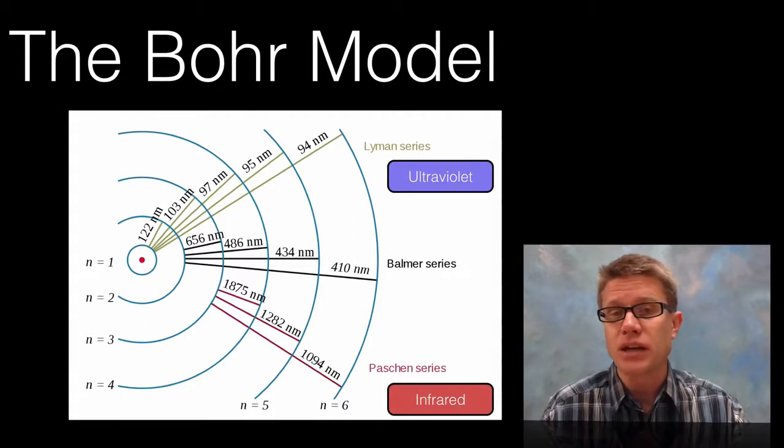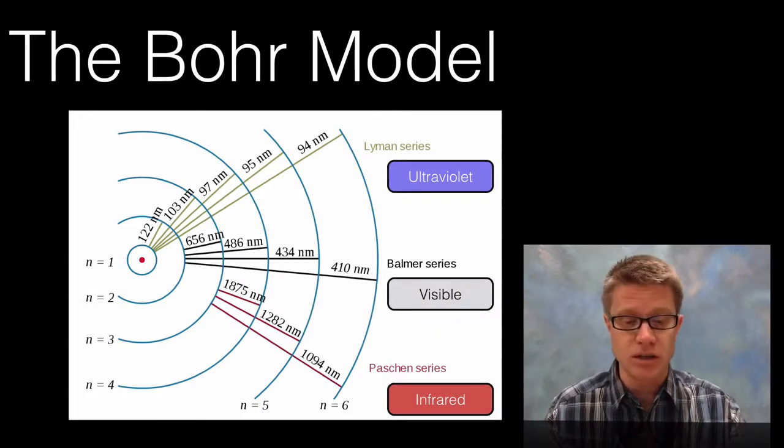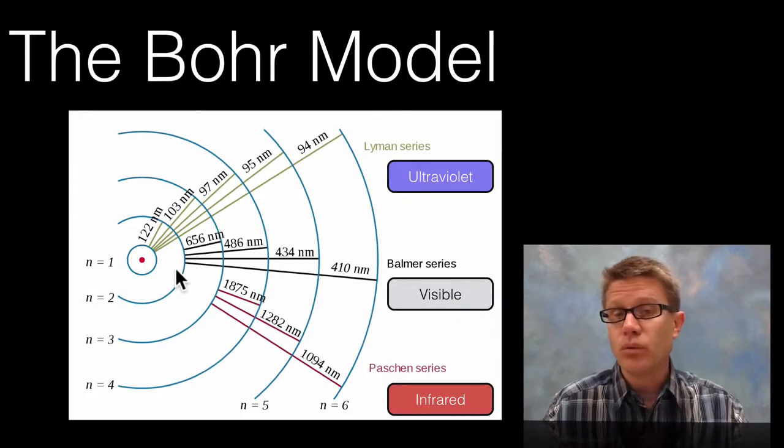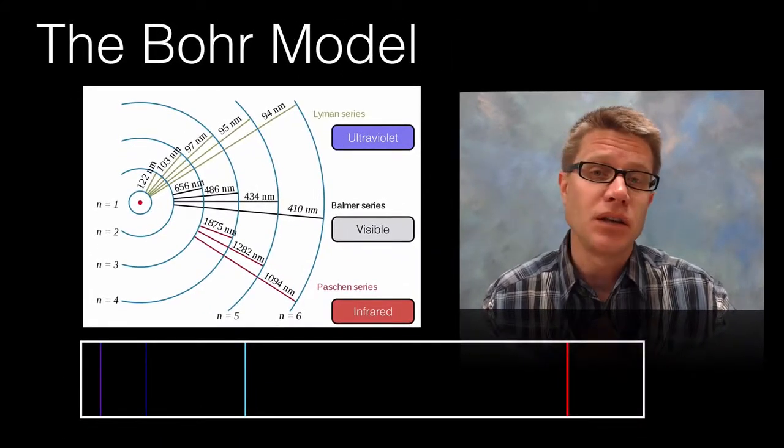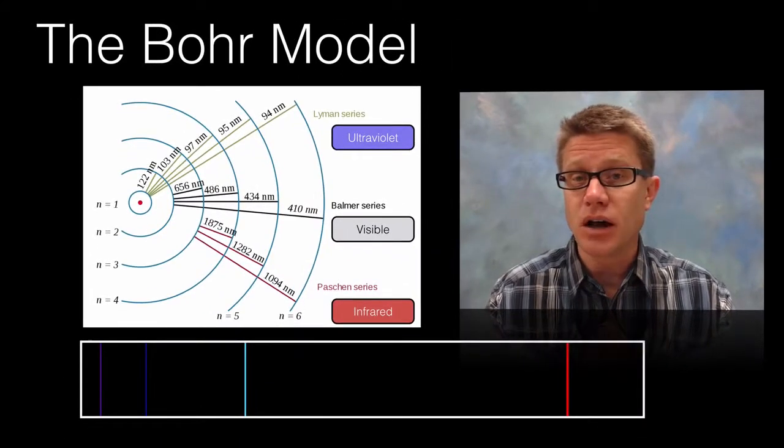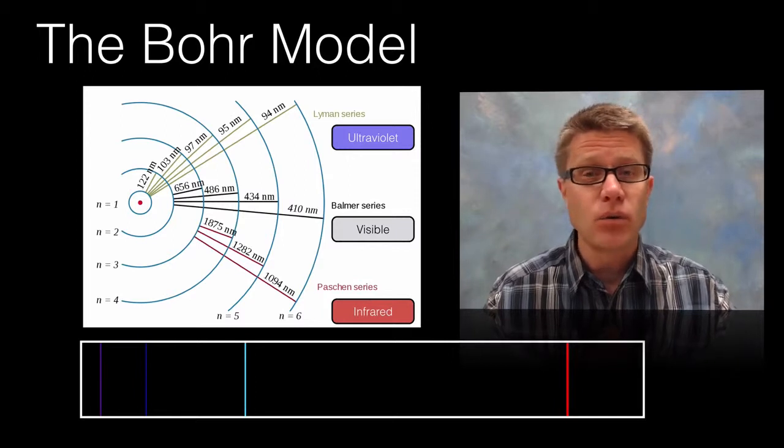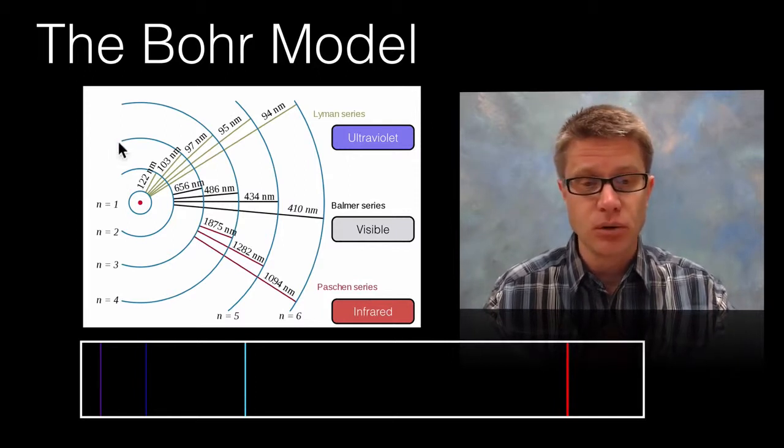We also saw the Paschen series that was showing the similar relationship. But this was in the infrared. And the Balmer series was seeing the same thing. And so what really he was explaining, let's throw the Balmer series up here, is that they were seeing these discrete units of light.